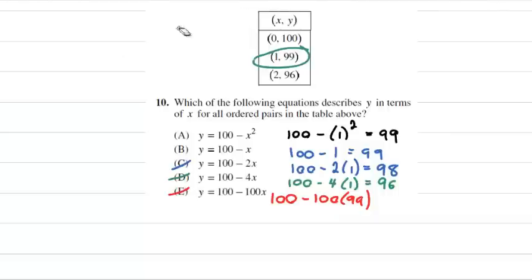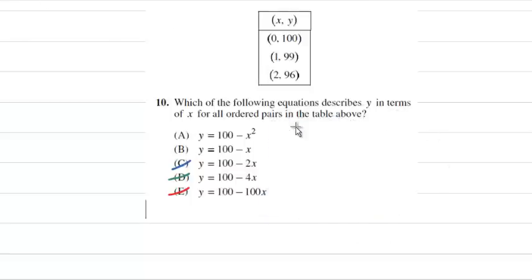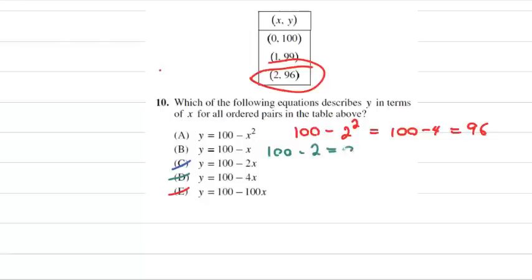Now we're down to just A and B, and we can fill in the last set of numbers. When I plug in 2 as my input, my output should be 96. 100 minus 2 squared is 100 minus 4, which is 96. Now on choice B, if I plug in 2, 100 minus 2 is 98. So I know that choice B doesn't work. Therefore, our best answer is choice A.